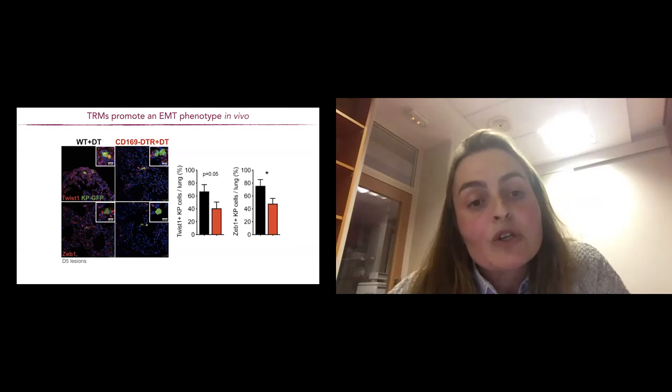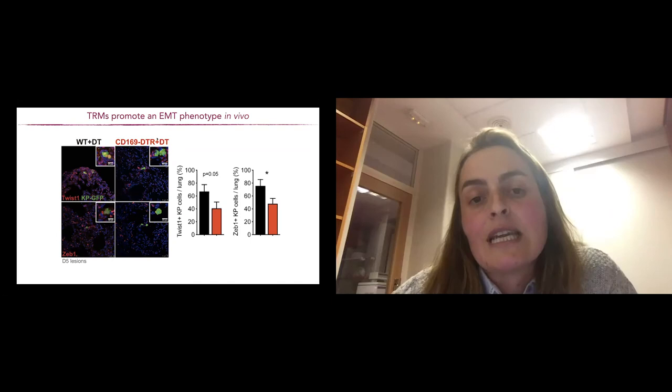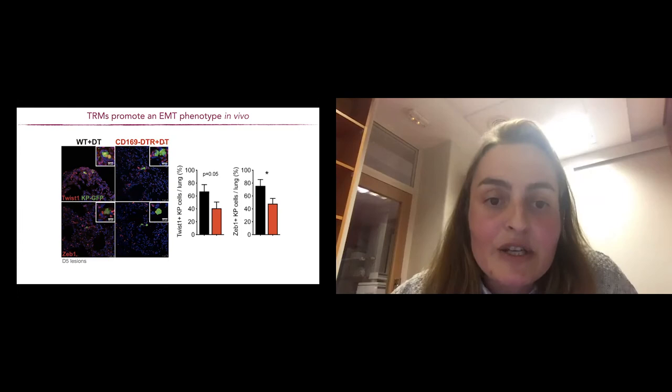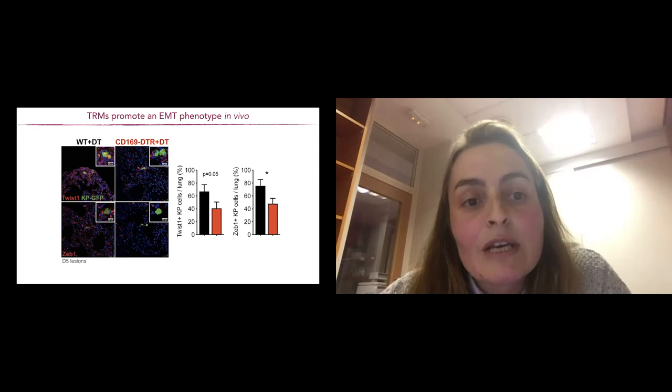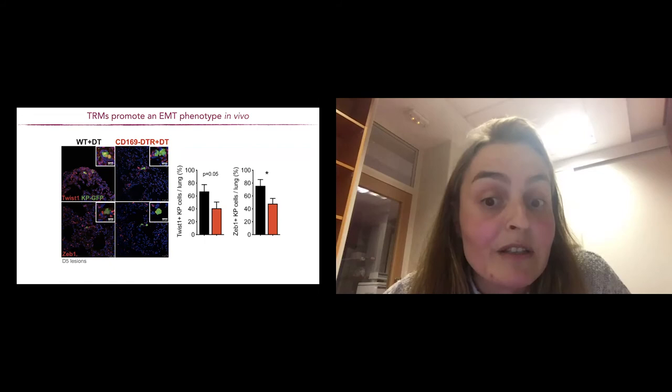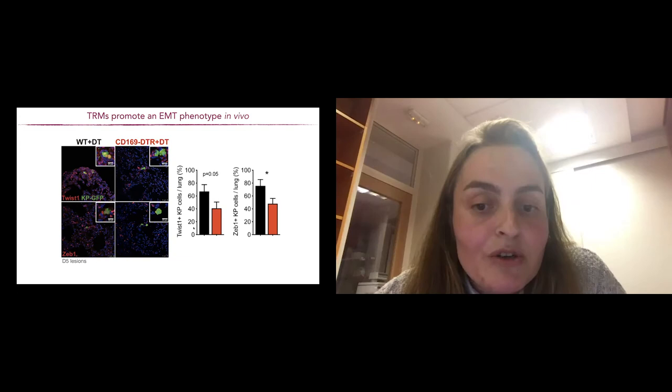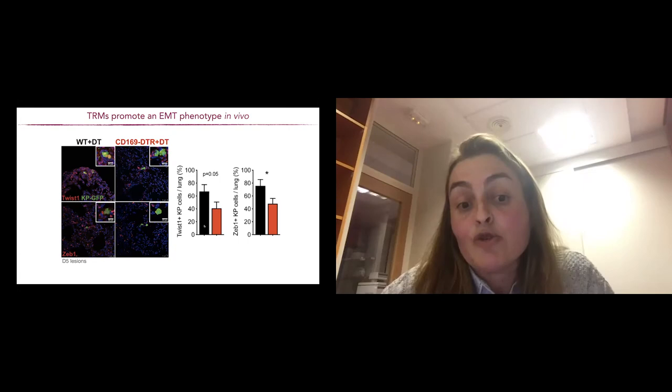But it was not only happening in vitro. Measuring EMT in vivo is kind of challenging. So we have to spend a lot of time optimizing this experiment, but what we observed is that when we get rid of these tissue resident macrophages using CD169 DTR mice, this is a mice in which upon diphtheria toxin installation in the trachea, you can get rid of the tissue resident compartment. What we observed is that very early when these tumor cells seed the lung, we observed that in the absence of these tissue resident macrophages, these tumor cells fail to express canonical markers, canonical transcription factors which are involved in turning on the mesenchymal phenotype. So the cells downregulate the expression of TWIST1 and also SNAI1. So again, further suggesting that not only in vitro, but in vivo, tissue resident macrophages at very early stages drive invasion and metastasis growth within the lungs.